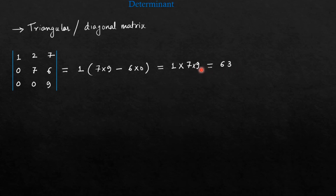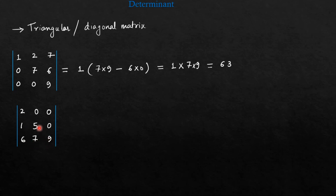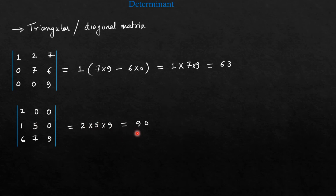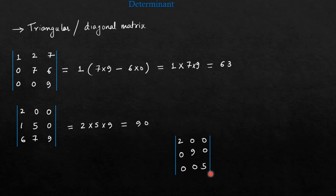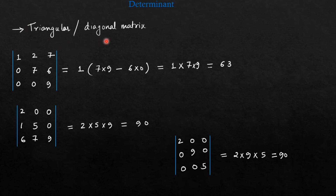Even for a lower triangular matrix, say with elements 2, 0, 0; 1, 5, 0; 6, 7, 9, the elements above the diagonal are each 0. The determinant is the product of diagonal elements: 2 into 5 into 9, which is 90. Similarly, for a diagonal matrix with elements 2, 0, 0; 0, 9, 0; 0, 0, 5, the determinant is 2 into 9 into 5, which is also 90. So in all cases of triangular and diagonal matrices, the determinant equals the product of diagonal elements.